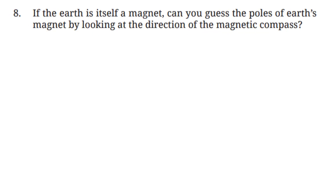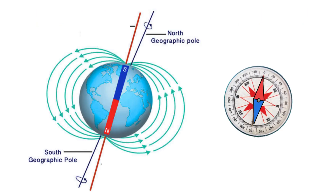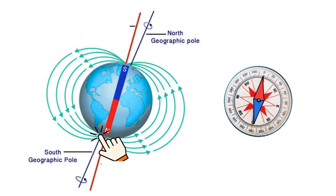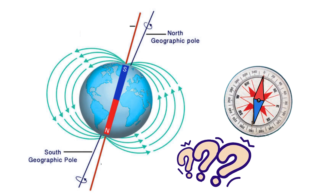Question 8: If the earth is itself a magnet, can you guess its poles by looking at the direction of a magnetic compass? The earth spins around an invisible axis, and where this axis meets the earth's surface at the top and bottom, those points are called the poles. The point near the Arctic Ocean is the north pole and the one in Antarctica is the south pole.